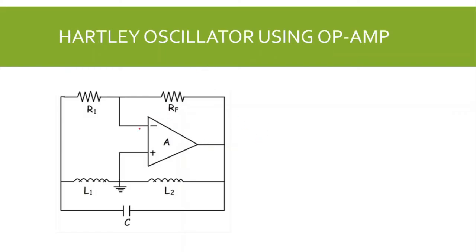The operational amplifier used is the inverting amplifier, which provides a phase shift of 180 degrees. The tank circuit — the LC circuit — serves as the feedback circuit. In this feedback circuit we have two inductors L1 and L2 and one capacitor C, which is why it is called the Hartley oscillator. This feedback circuit also provides a phase shift of 180 degrees, so the overall phase shift is 360 degrees. The loop gain — amplifier gain A multiplied by the feedback factor — is adjusted so that the overall loop gain equals 1.